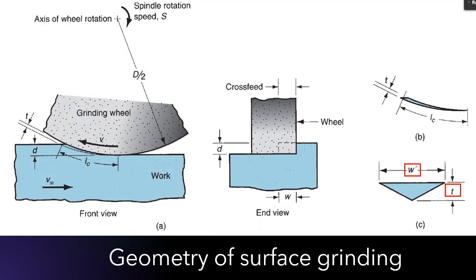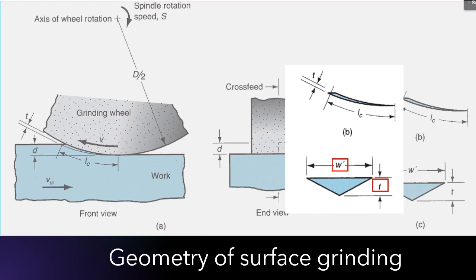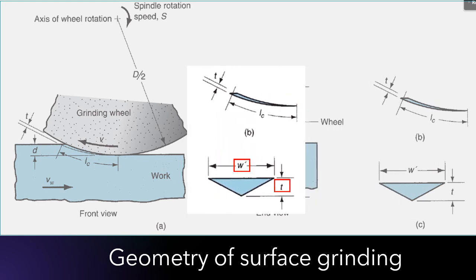Each grain of the grinding wheel cuts an individual chip whose longitudinal shape before cutting and whose assumed cross-sectional shape is triangular. At the exit point of the grit from the work, where the chip cross-section is largest, this triangle has the height T and the width W'.